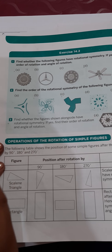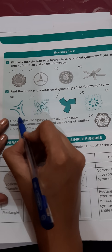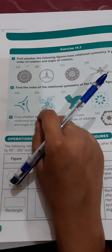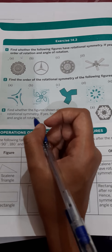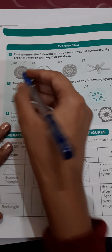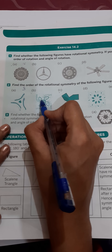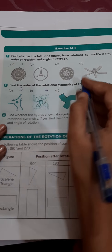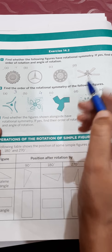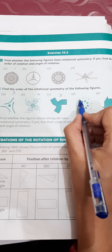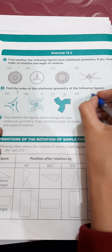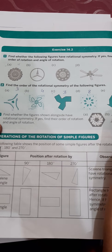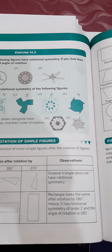Question two: find the order of rotational symmetry of the following figures. You just have to count how many parts are there. The first figure has three parts — order is three. The next has four parts — order is four. Another has three — order is three. The next has eight — order is eight. The last one has four — order is four.